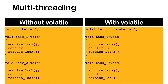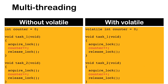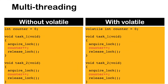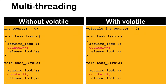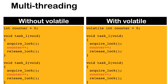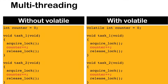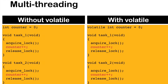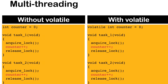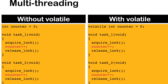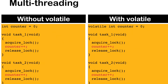The same concept applies in multi-threading applications. Let's say two tasks share a common resource. Here, a counter is incremented in both tasks. If we do not use the volatile keyword, we may lose the updated value that was changed by the other task.